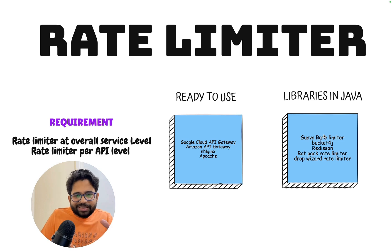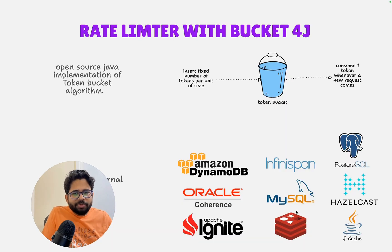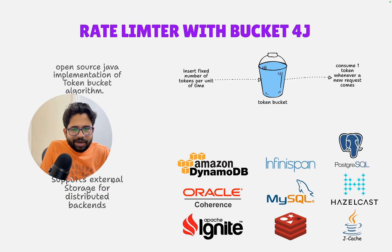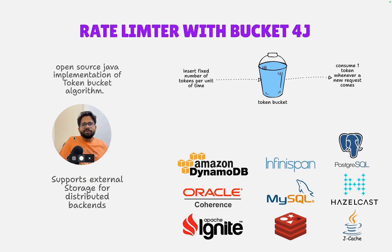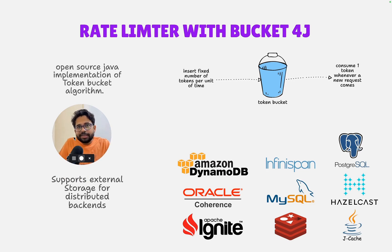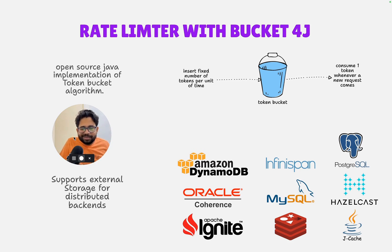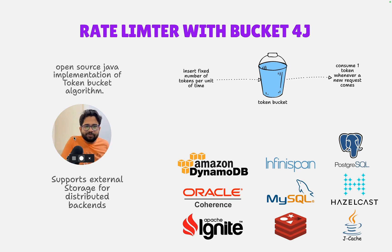Once you understand Bucket4j, you will see the overall flow. Before moving into the Bucket4j library, I'll talk a bit about what is the token bucket algorithm which Bucket4j uses. I have made one separate video on the details of the token bucket algorithm — how things work at the low level. I'll link it in the description. It's a very simple code, around 10-15 lines, and it does the same job of token bucket.